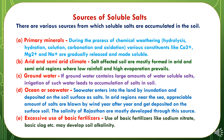Third is groundwater. If groundwater contains large amounts of water-soluble salts, irrigation with such water leads to accumulation of salts in soil. Fourth is ocean or seawater. Seawater enters into the land by inundation and is deposited on the soil surface as salts. In arid regions near the sea, appreciable amounts of salts are blown by wind year after year and deposited on the surface soil; the salinity of Rajasthan soils is mostly developed through this source. Fifth is excessive use of basic fertilizers like sodium nitrate and basic slag, which may develop soil alkalinity.